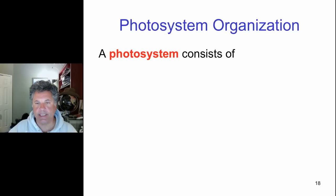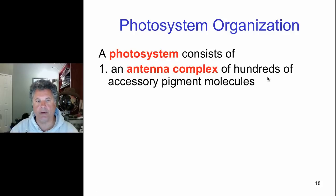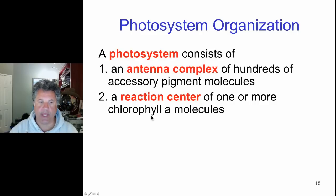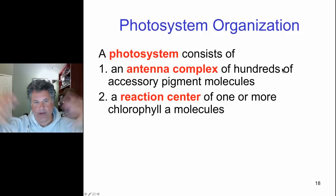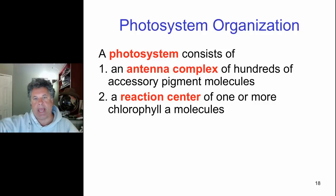Now let's look at the photosystems that contain these photopigments that harvest light energy. The photosystem consists of several components. One is an antenna complex, and there are hundreds of pigment molecules found there — chlorophyll A, chlorophyll B, and other accessory pigments such as carotenoids and phycobiliproteins. There is also a reaction center that has two chlorophyll A molecules. It's the job of the antenna complex to funnel energy harvested by the absorption of photons into the reaction center, where electrons will be elevated to a higher energy state and passed on to electron carriers.